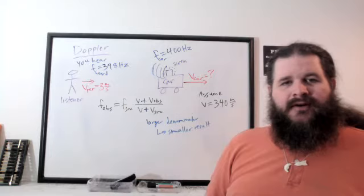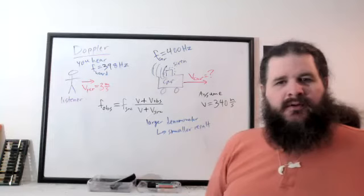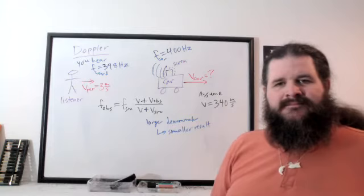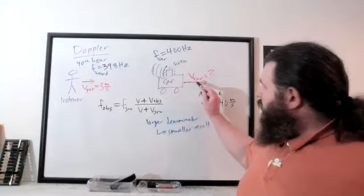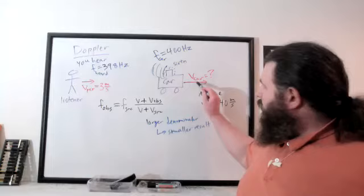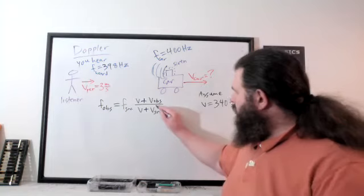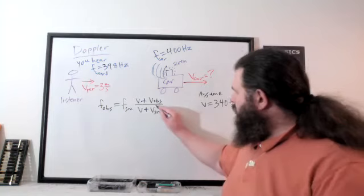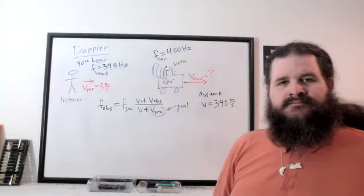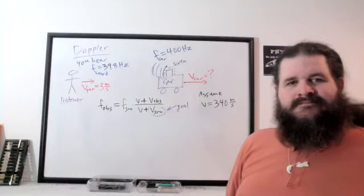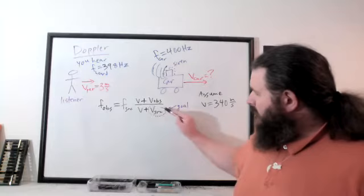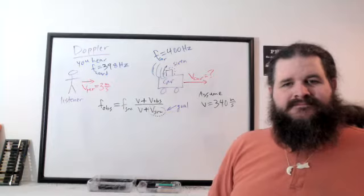Of the entire formula, the one unknown we're trying to solve for is V_source — we don't know how fast the car is moving. Let's try solving for that algebraically in terms of variables and then plug in numbers at the end. Our first difficulty is that V_source is in the denominator of a fraction.